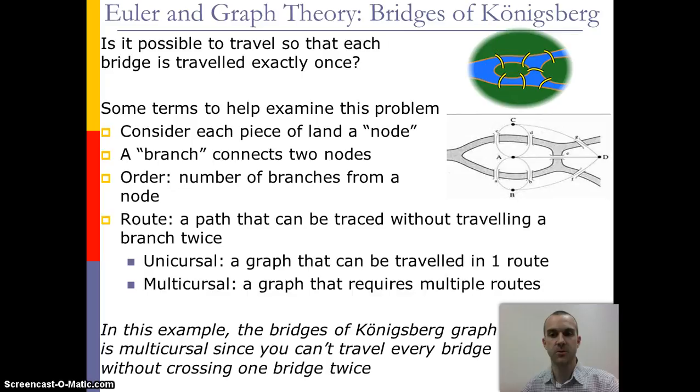So for example, if we look at C, the order of C would be three because it has three branches coming off of it. When we talk about a route, then we're talking about what is the overall path that would allow us to travel the entire image in this case.